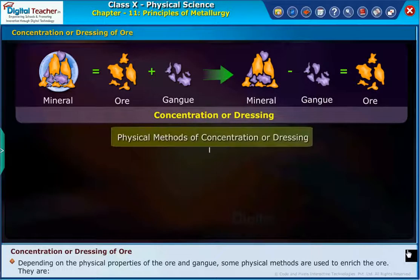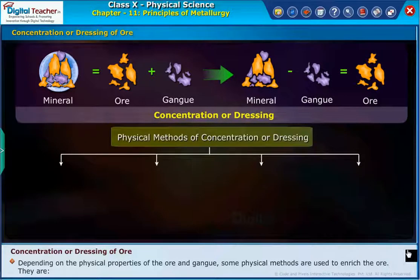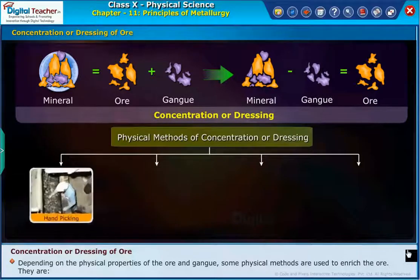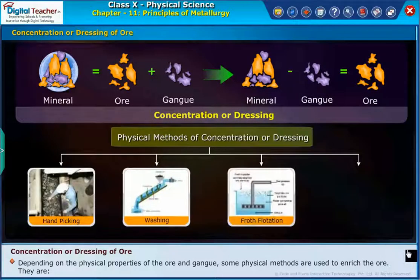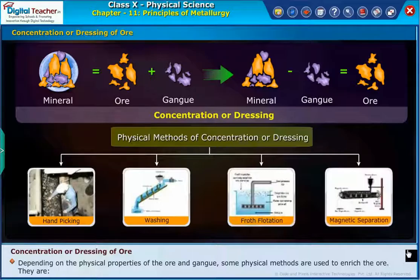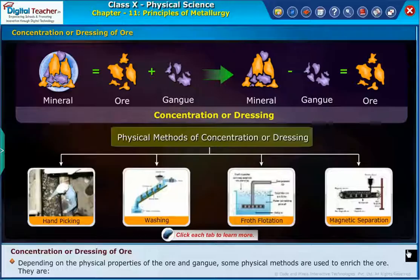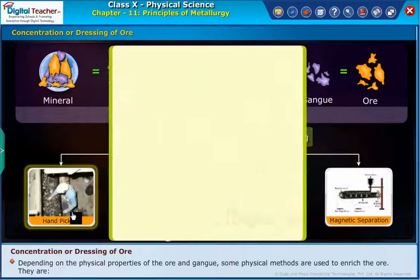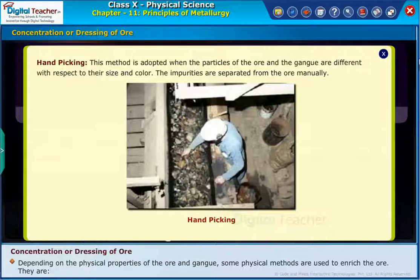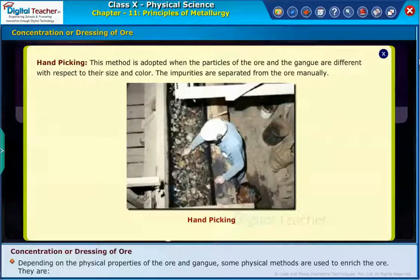The physical methods used are: handpicking, washing, froth flotation, and magnetic separation. Handpicking is adopted when the particles of the ore and the gangue are different with respect to their size and color. The impurities are separated from the ore manually.